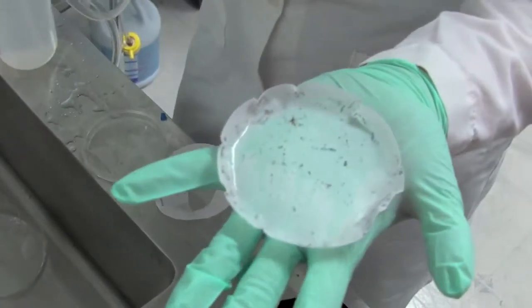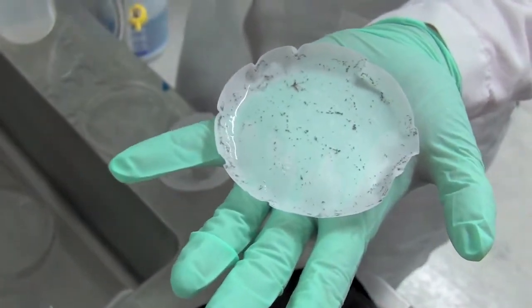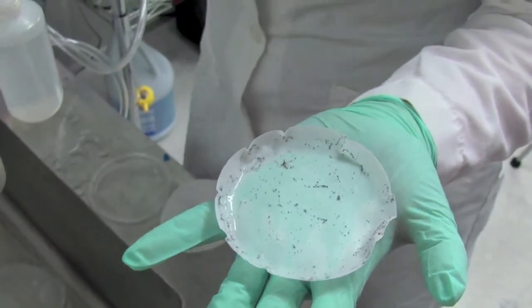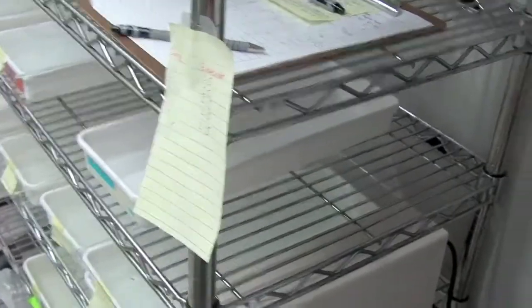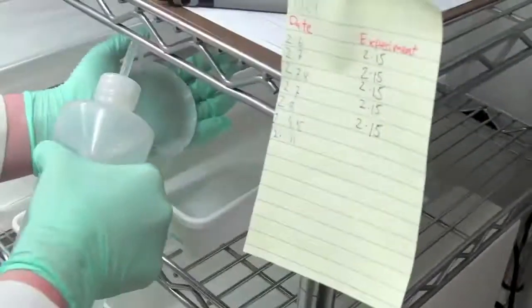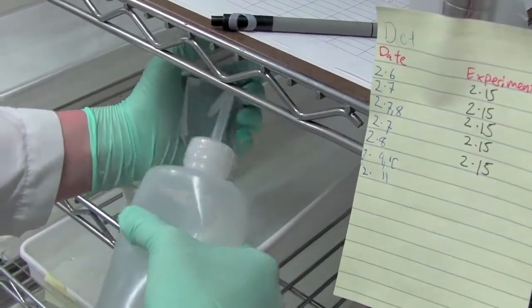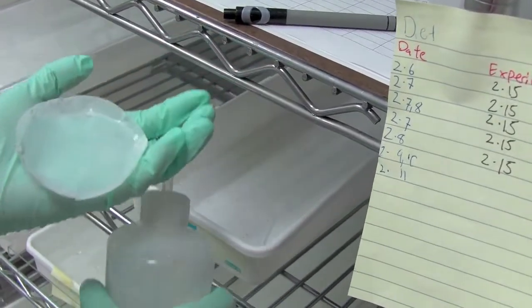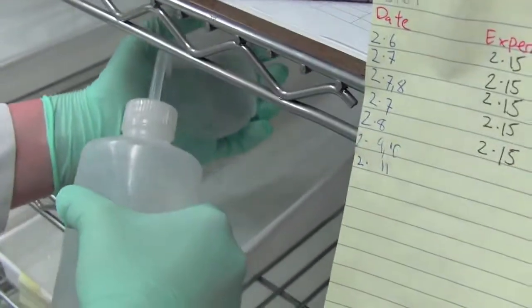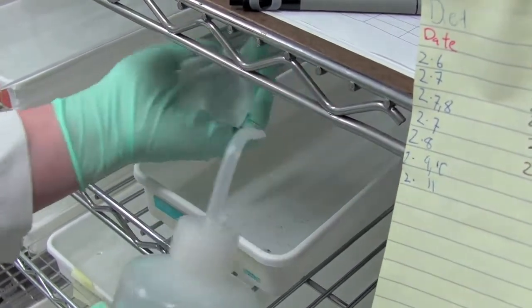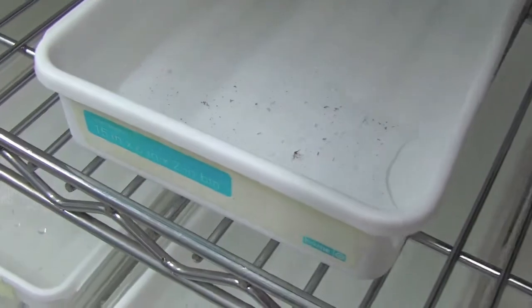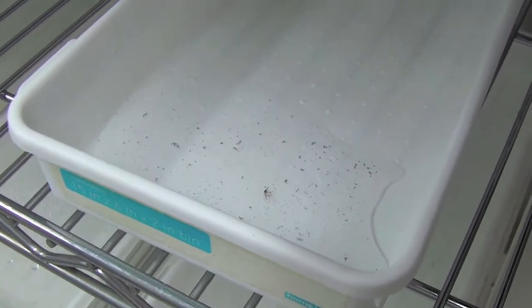And here are the eggs. There's an adult in there I should have got out, but otherwise... So now we put these into trays over here. I'm going to let them hatch, feed them some yeast, and they'll mature.